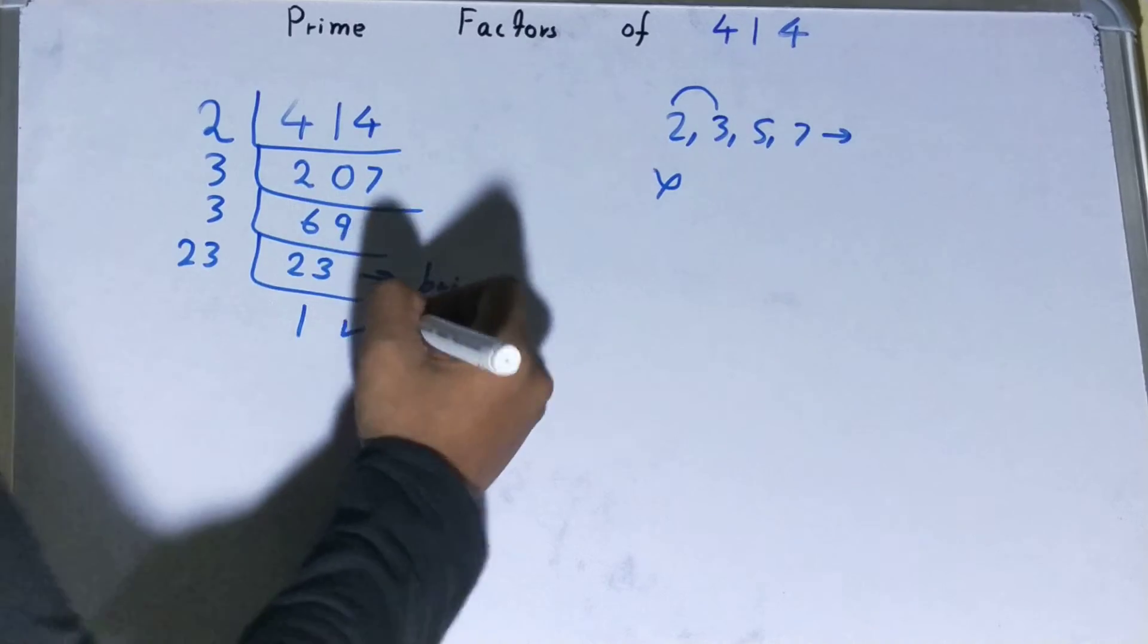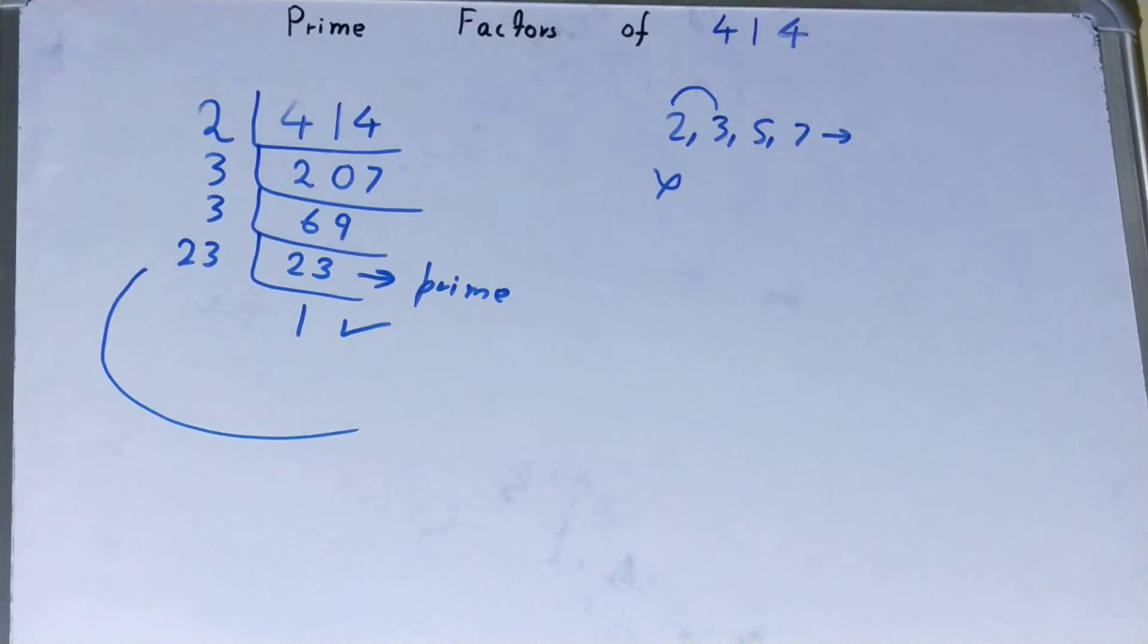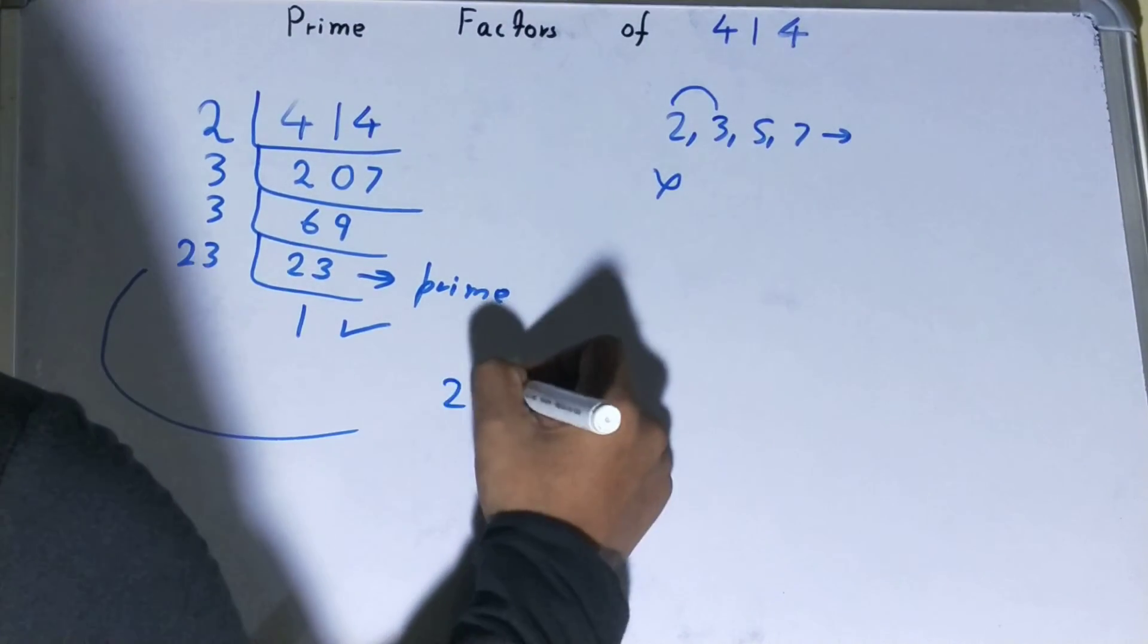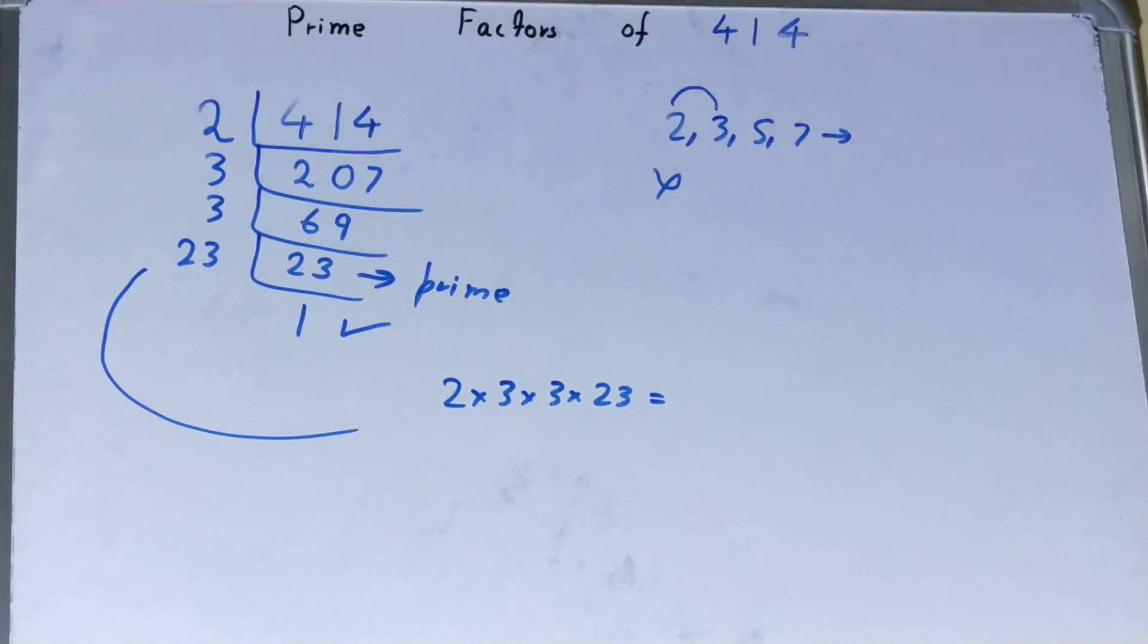Once you do so, you'll be left with one, and once you're left with one, the work is done. Whatever you have on the left-hand side will be the set of prime factors for the number 414, that is two cross three cross three cross 23.